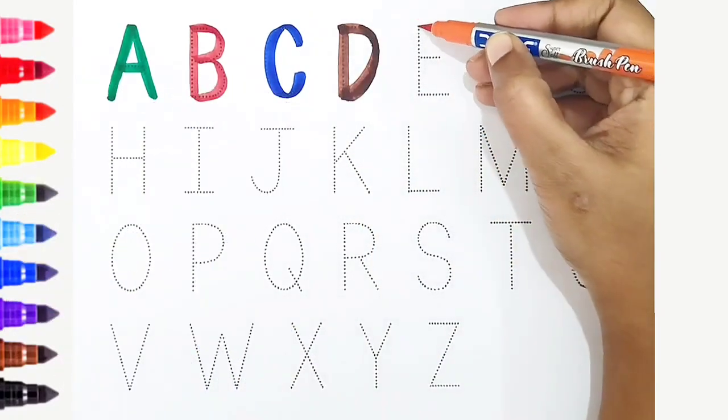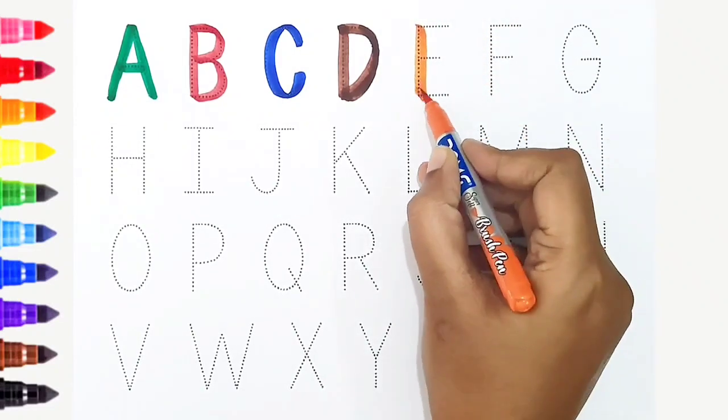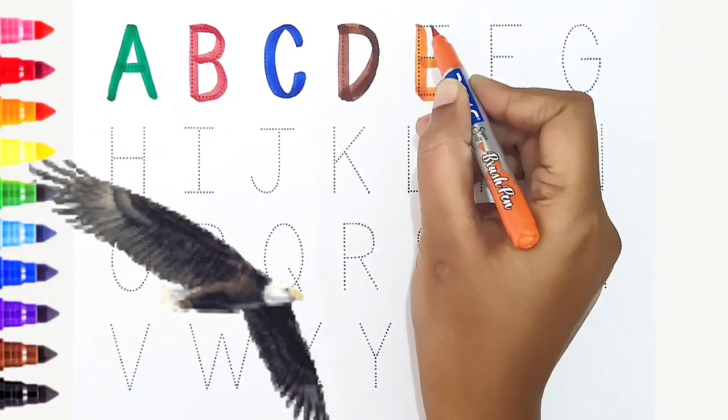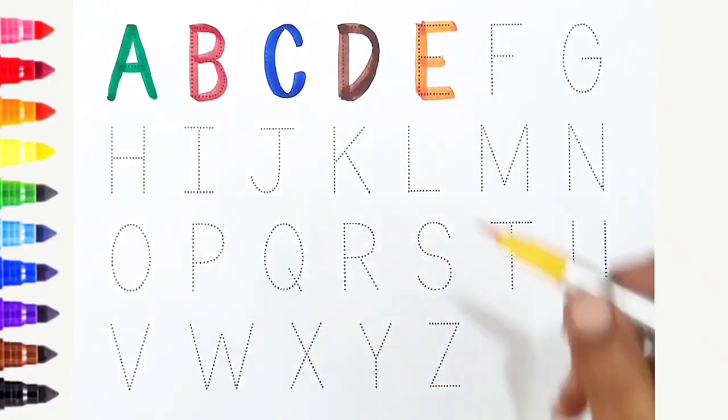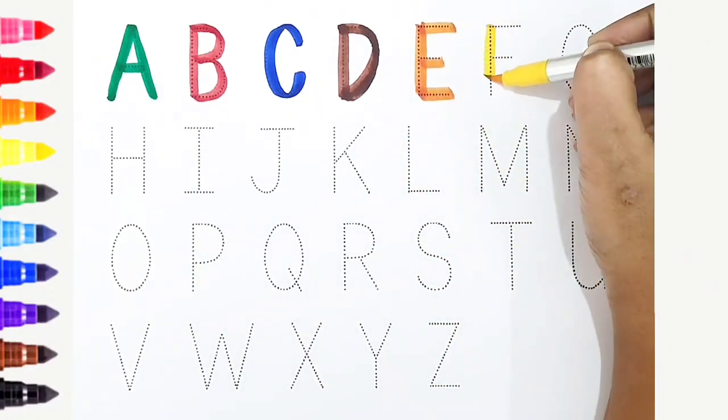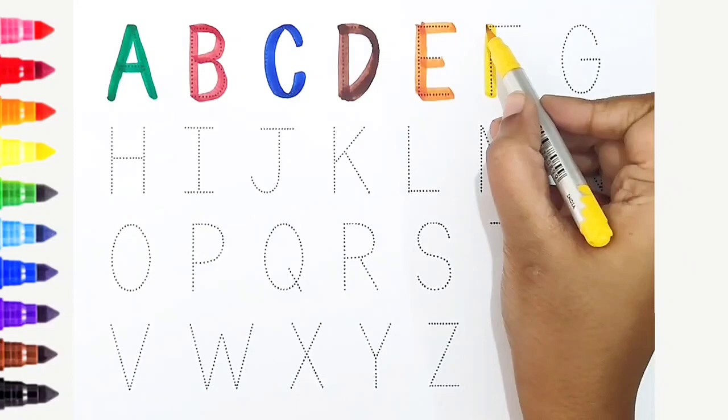E, orange color. E is for eagle. F, yellow color. F is for frog.